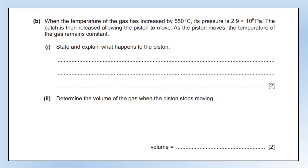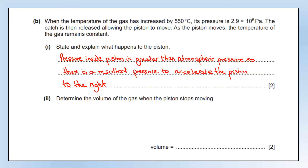When the temperature of the gas is increased by 550°C, its pressure is 2.9 × 10⁵ pascals — about three times atmospheric pressure. The catch is then released, allowing the piston to move. As the piston moves, the temperature remains constant. State and explain what is happening to the piston. The pressure inside is greater than atmospheric pressure outside, so there is a resultant pressure that acts to accelerate the piston to the right. That's our statement. The explanation is: there is a resultant force, which gives us the acceleration.